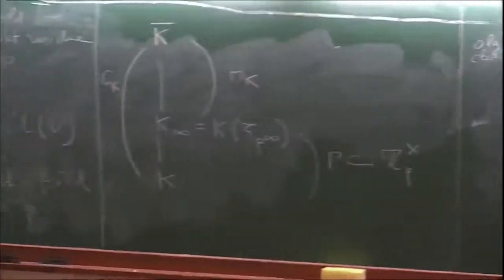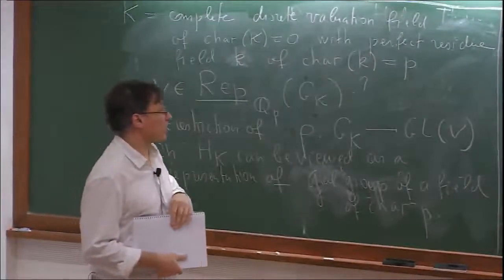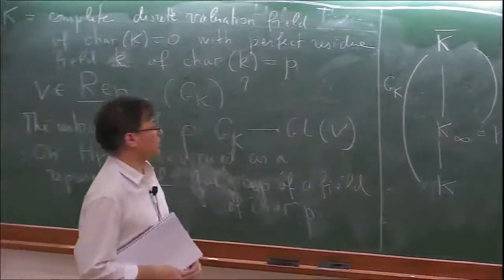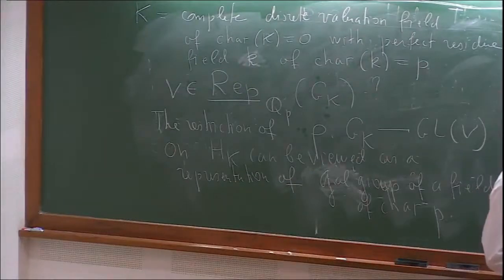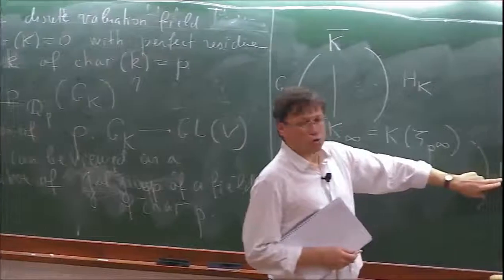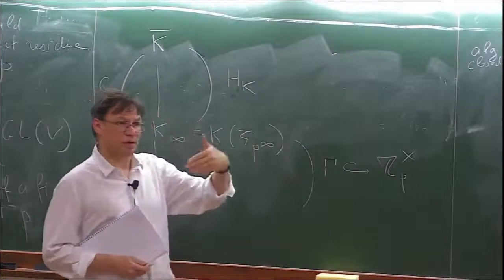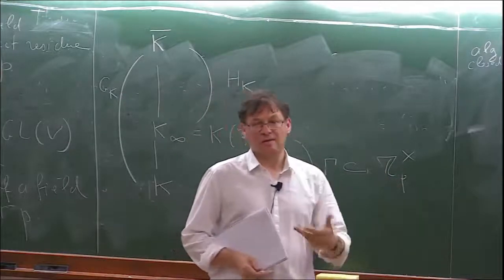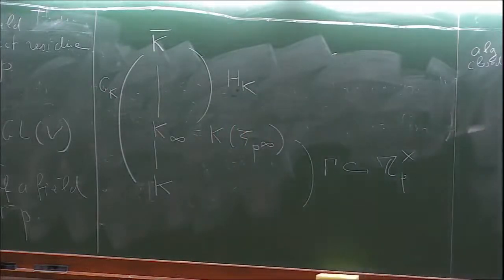In the next lectures, I will mainly describe the more classical first approach of Fontaine using period rings, B-cris and B-dR. From this point of view, the idea is to encode the action of Gamma in other structures: we consider étale phi-modules but replace Gamma by some other structure such as, for example, a filtration. I will explain in more detail tomorrow.